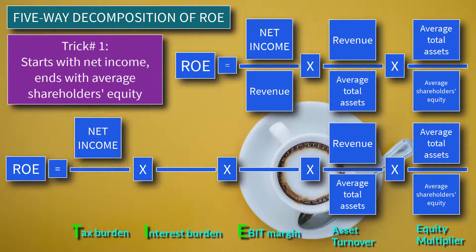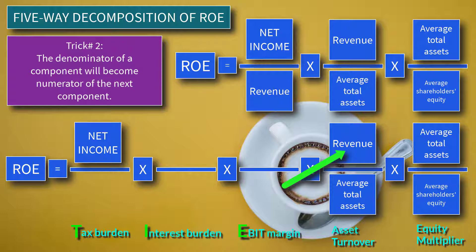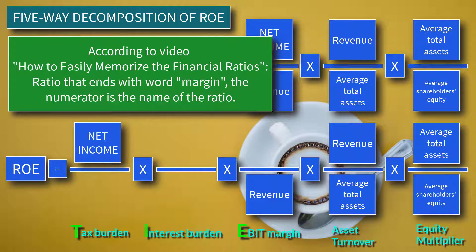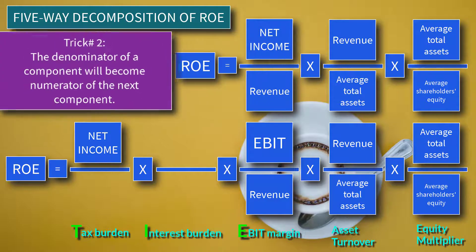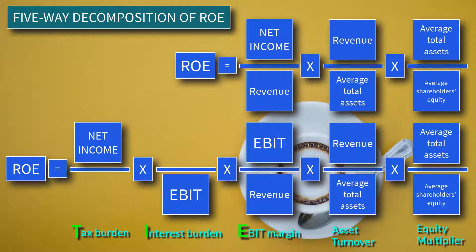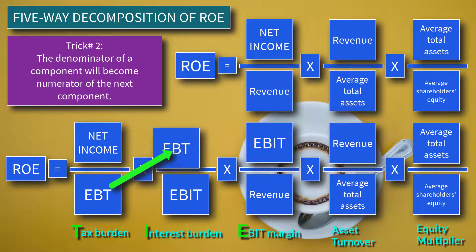Applying the first trick, we have the complete formulas. Using the second trick, the numerator of Asset Turnover — revenue — is also the denominator of the prior component, EBIT margin. For a ratio ending with the word 'margin,' the numerator is the name of the ratio, so the numerator of the third component is EBIT or Earnings Before Interest and Taxes. Applying the second trick, EBIT becomes the denominator of the second component, interest burden. The first component has a denominator of EBT or Earnings Before Tax, which becomes the numerator of the next component.